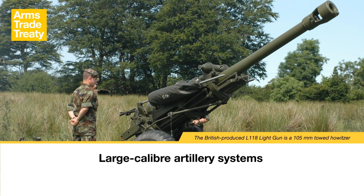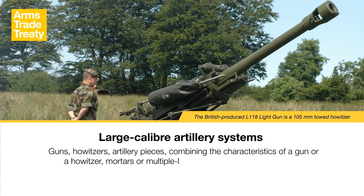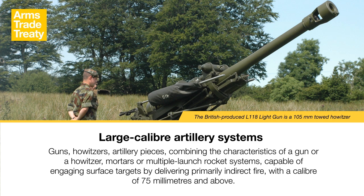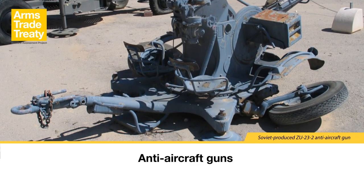Large Calibre Artillery Systems: The definition contained in the UN Register at the time of entry into force of the ATT is guns, howitzers, artillery pieces combining the characteristics of a gun or a howitzer, mortars or multiple launch rocket systems capable of engaging surface targets by delivering primarily indirect fire with a calibre of 75mm and above. There are artillery systems that have a calibre below 75mm, in particular mortars and multiple launch rocket systems or MLRS. Some of these systems fall within the parameters of the small arms and light weapons category of the ATT. The issue of direct fire artillery, for example anti-tank and anti-aircraft guns, is also not clearly elaborated in the UN Register category description. Some states have reported transfers of anti-tank and anti-aircraft guns as large calibre artillery. Some anti-tank and anti-aircraft guns could also be reported as small arms and light weapons and are discussed in Module 5.